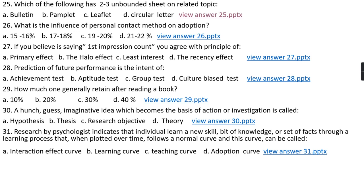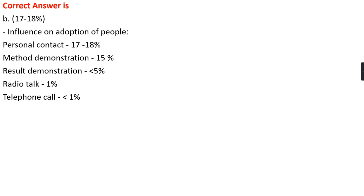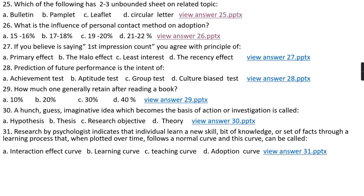Question number twenty-six: What is the influence of personal contact method on adoption? Option A, 15 to 16 percent; option B, 17 to 18 percent; option C, 19 to 20 percent; option D, 21 to 22 percent. The right answer is option B, that is 17 to 18 percent. Personal contact has 17 to 18 percent influence on adoption. Method demonstration has 15 percent influence, result demonstration has less than 5 percent, radio has only one percent influence, and telephone call has less than one percent influence on adoption.